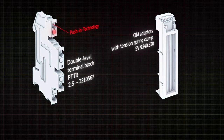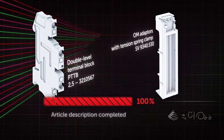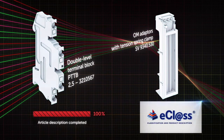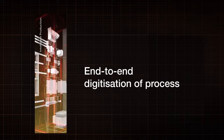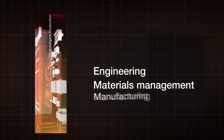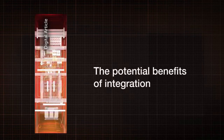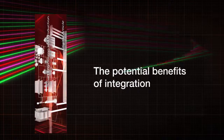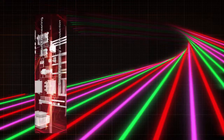By saving data on relevant component attributes in the standardized and exchangeable E-Class format, it is easy to make information available for configuration tools, online shops and engineering systems. One of the tangible and lasting changes that Germany's Industry 4.0 initiative will bring is the end-to-end digitization of processes across the entire value chain, including engineering, materials management and manufacturing. It is important to highlight the potential offered by the integration of engineering tools and data models, and this integration can already be put into practice today.